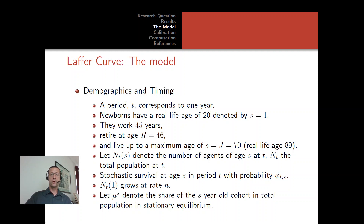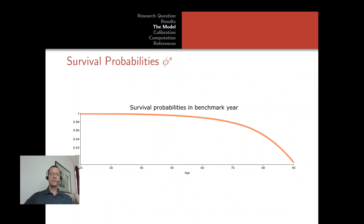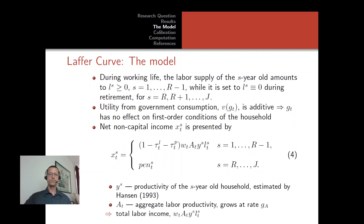We choose the population growth rate N as the average US population growth rate during 1990–2010, the same calibration period as Trabant and Ulich. Survival probabilities are stochastic and also averaged over 1990–2010. They decline monotonically over age: at age 20, survival to age 21 is essentially 100%, while survival from age 88 to 89 is approximately 89%, and at age 89 the survival probability is zero — you die for certain at the end of age 89.